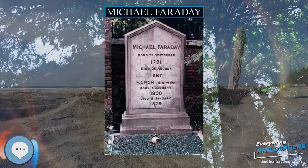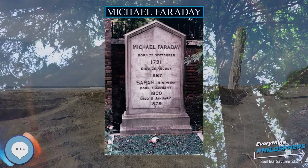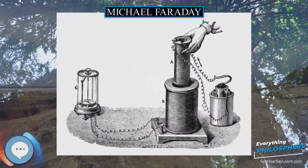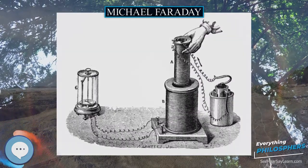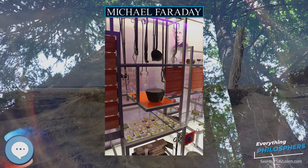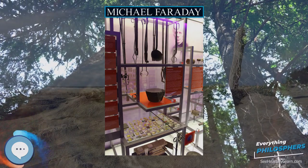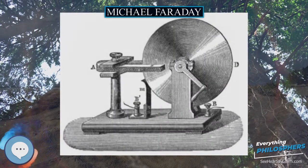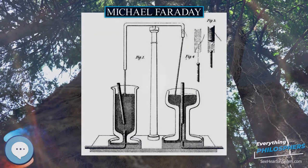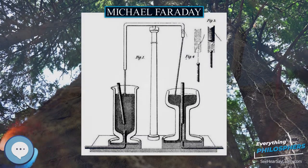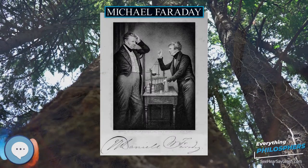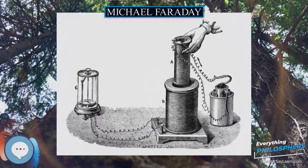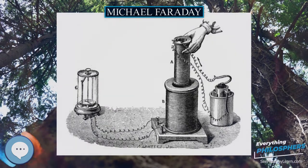Near the end of his career, Faraday proposed that electromagnetic forces extended into the empty space around the conductor. This idea was rejected by his fellow scientists, and Faraday did not live to see the eventual acceptance of his proposition by the scientific community. Faraday's concept of lines of flux emanating from charged bodies and magnets provided a way to visualize electric and magnetic fields; that conceptual model was crucial for the successful development of the electromechanical devices that dominated engineering and industry for the remainder of the 19th century.